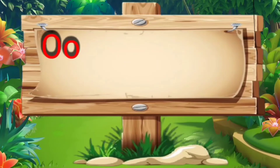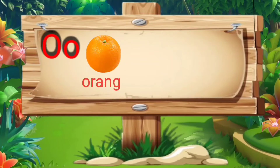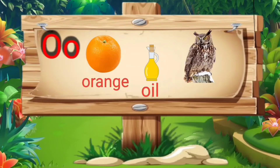O. O for orange: O, R, A, N, G, E — orange. O for oil: O, I, L — oil. O for owl: O, W, L — owl.